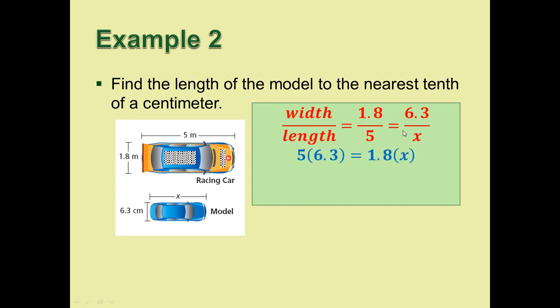We can cross multiply. So 1.8 times x, and then the 5 times 6.3 you will cross multiply. Simplify that down. 5 times 6.3 is 31.5. 1.8x is still 1.8x. Divide both sides by 1.8. You're going to wind up with x is 17.5 centimeters. Check and make sure that that is reasonable. If this length of the car is significantly bigger than the height or width of the car, then the length of the car, 17.5, had better be significantly bigger than the width of the car, 6.3. And it is, so that checks out.